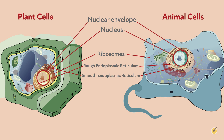The cell can use these proteins for carrying out genetic processes, sending signals, and for providing structural support for the cell. Smooth ER contains enzymes that process lipids or fats for cell use.